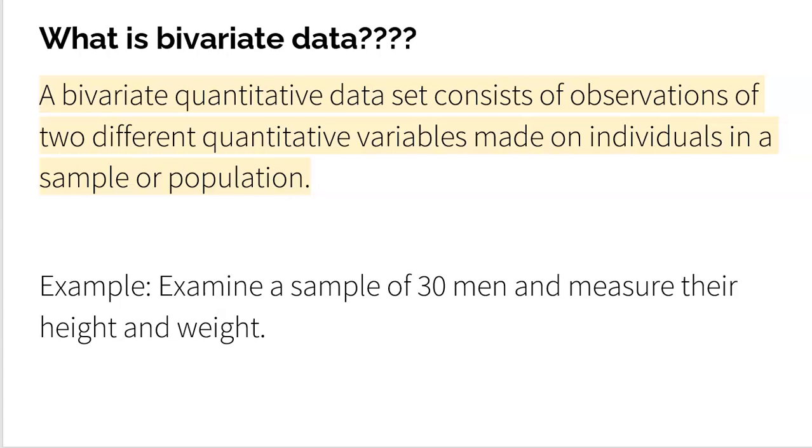So we have 30 men, and from each man, we're going to collect two quantitative data. That's bivariate data. It's bivariate because there's two of them, and they're all from the same individuals.